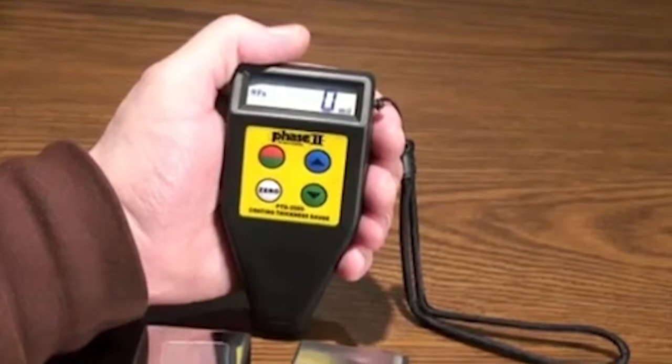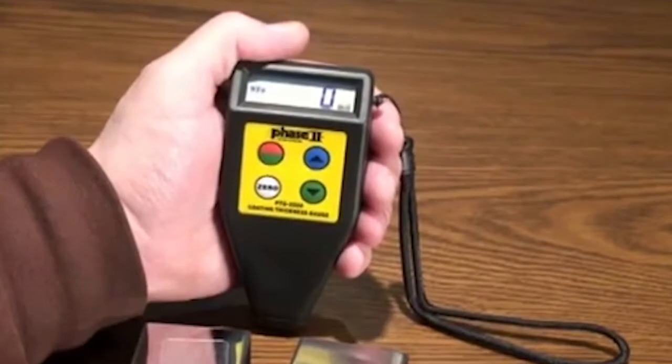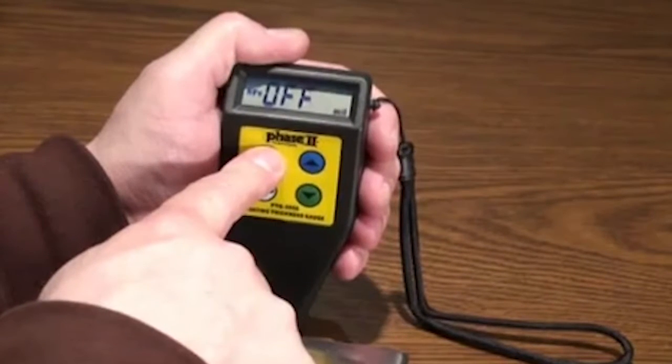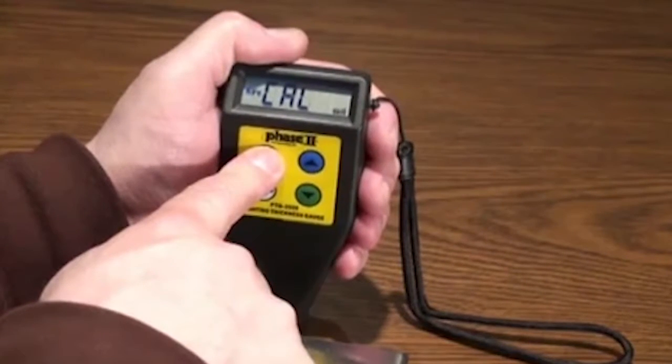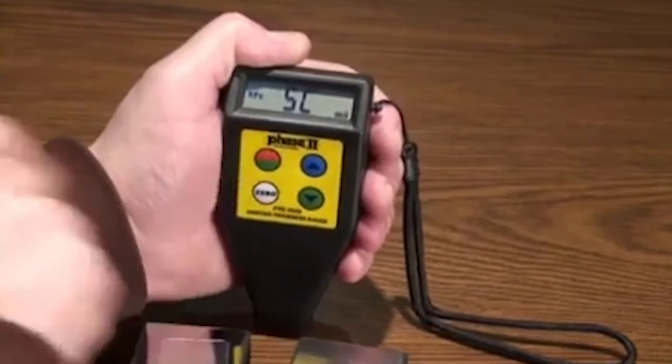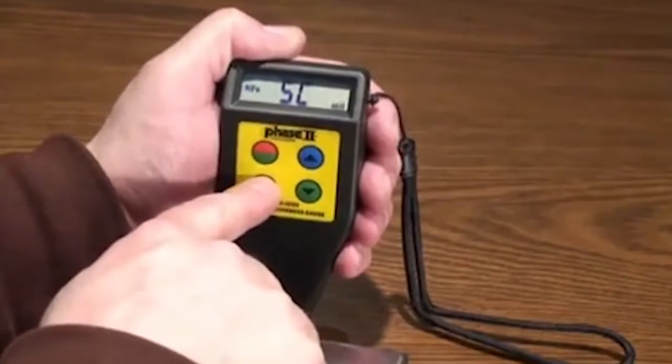To change from single measurement mode to continuous scan mode, hold power key down approximately 9 seconds until SC is displayed on the screen. Immediately press the zero key to set to next mode.